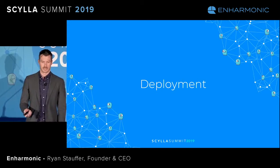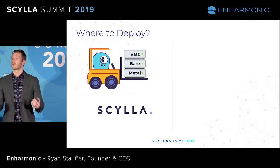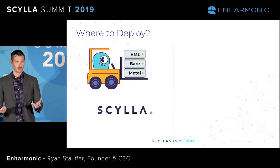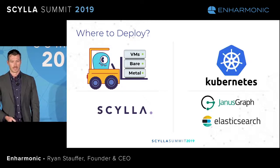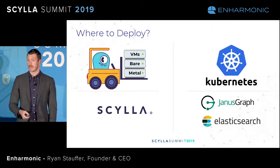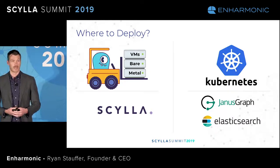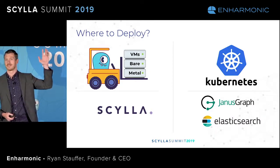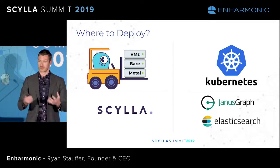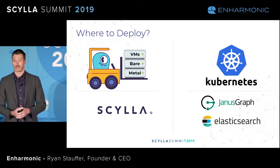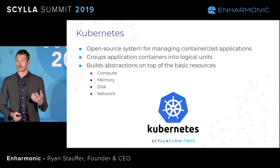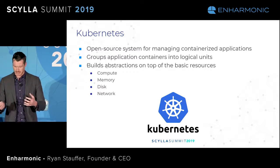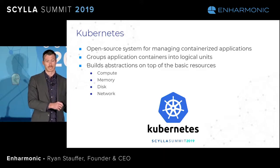How do we actually deploy this? First question is where. Scylla is pretty simple — we'll deploy it in the exact same way as a regular Scylla cluster, on VMs or bare metal. On the Janus Graph and Elasticsearch side, it really makes sense to deploy on Kubernetes. Kubernetes is a fantastic way to do these types of deployments — it makes it much easier to manage. Fundamentally, Kubernetes is an open source system that lets us manage containerized applications, grouping related application containers into logical units. It's all about building abstractions on top of basic resources, so instead of dealing with compute, memory, disk, and network, we're dealing with pods, services, and deployments.